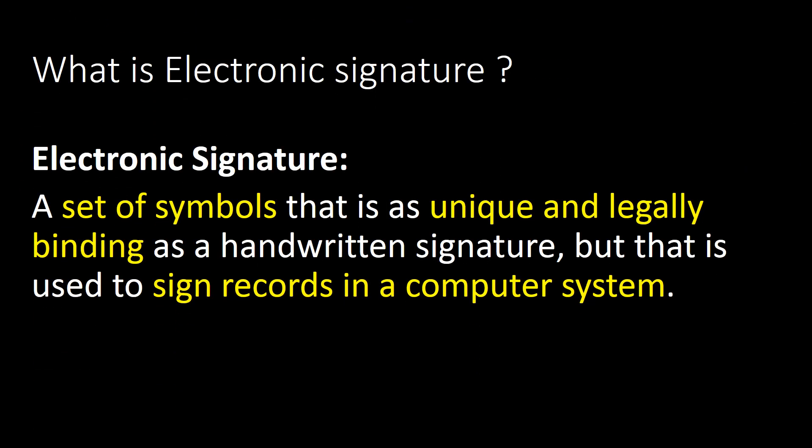What is an electronic signature? A set of symbols that is as unique and legally binding as a handwritten signature, but that is used to sign records in a computer system, is called an electronic signature.